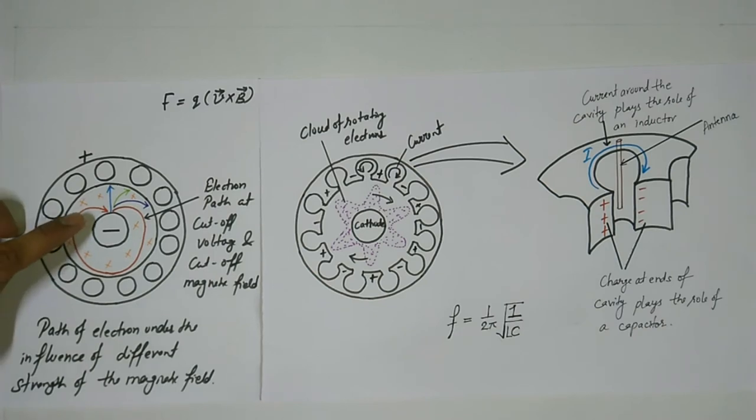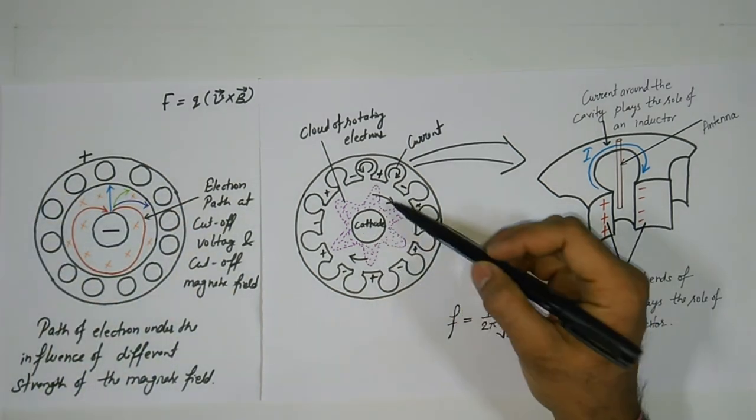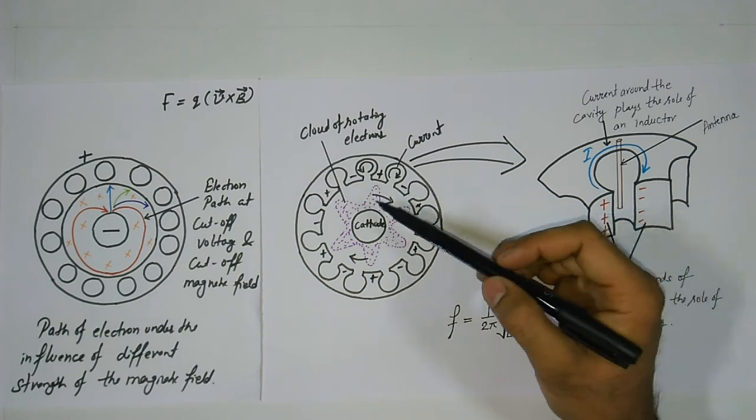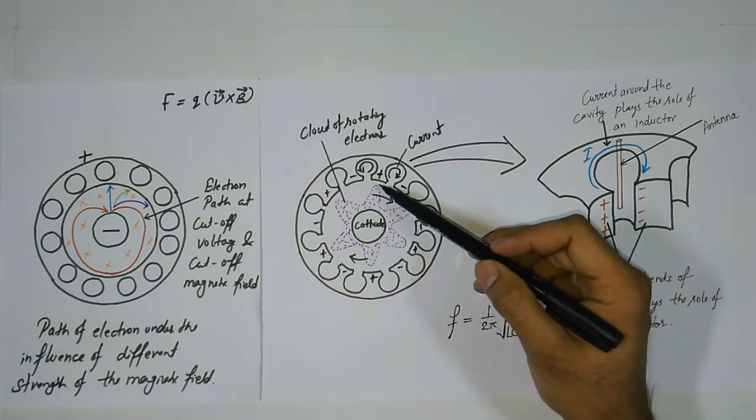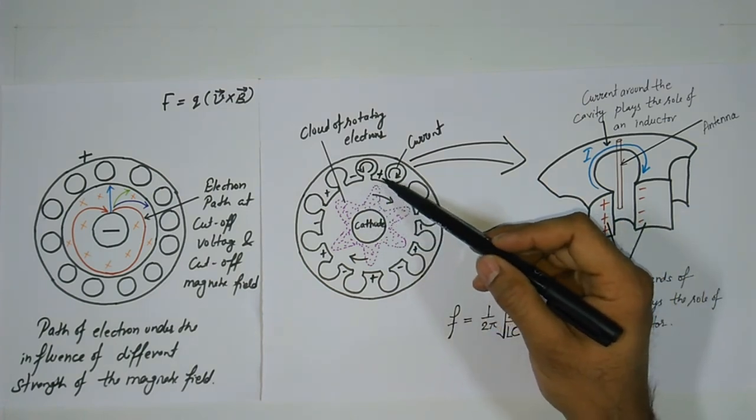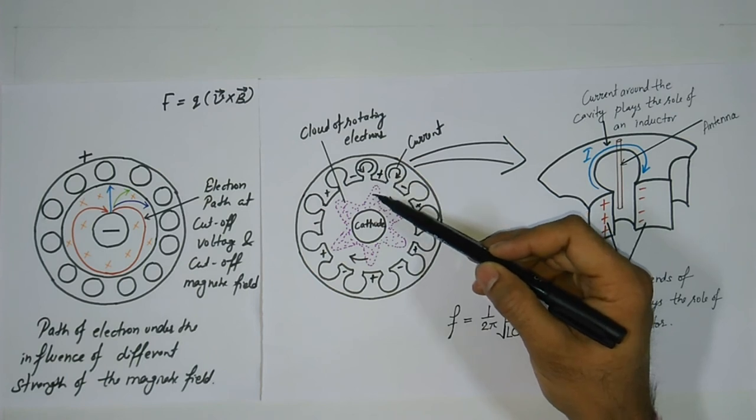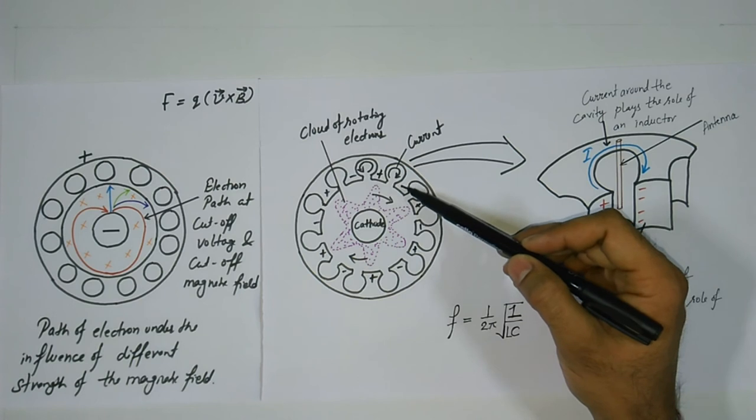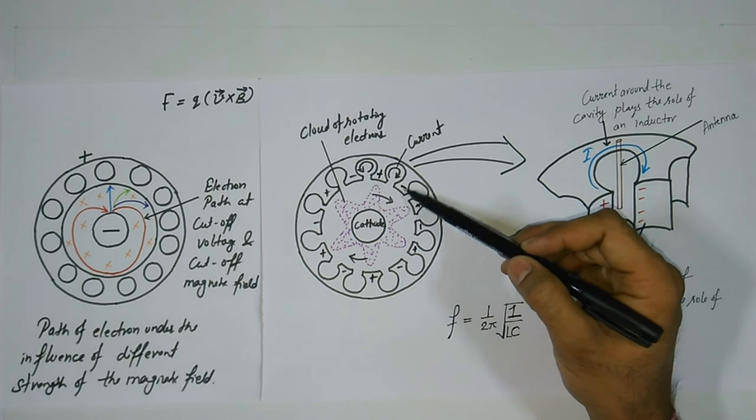When electrons are continuously emitted all around the cathode they collectively move clockwise around the cathode filament forming an electron cloud. When an electron approaches an anode vane a positive charge is induced within the vane as electrons in the vane are repelled by the approaching electrons. Meanwhile a negative charge is induced in the neighboring anode vane due to the accumulation of these repelled electrons.